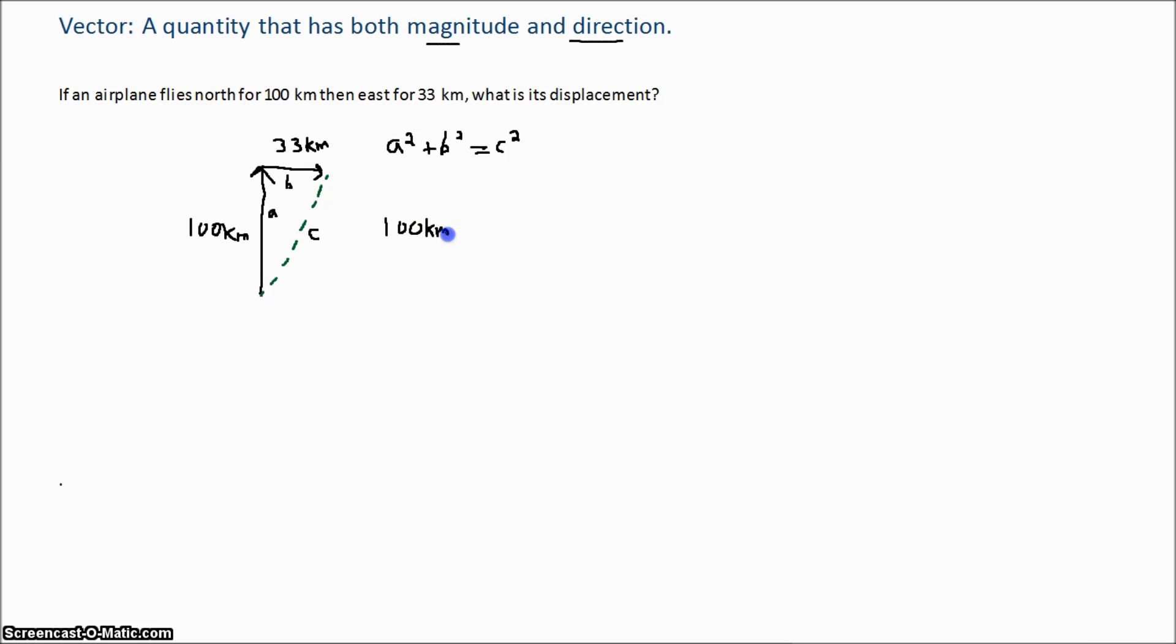100 kilometers, and we'll just take that whole thing and square it, plus 33 kilometers squared equals our displacement squared. So we've solved this out, that's 10,000 kilometers squared.